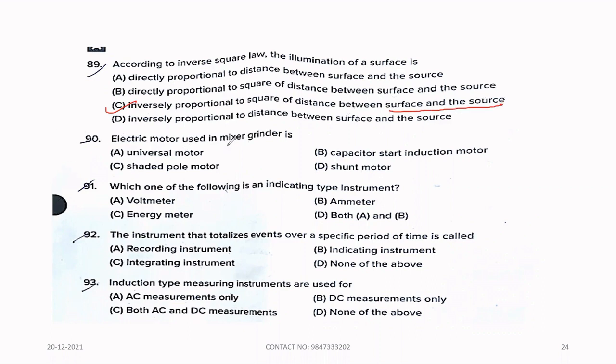Ninety. Electric motor used in mixer grinder is, option A, universal motor. Ninety-one. Which one of the following is an indicating type instrument? Ninety-two. The instrument that totalizes events over a specific period of time is called, option C, integrating instrument. Ninety-three. Induction type measuring instruments are used for, option A, AC measurement only.